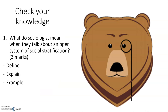Finally, there is a practice question for you to have a go at: what do sociologists mean when they talk about an open system of social stratification? This isn't a super obvious question — think about what an open system is. If you're stuck, go back to our first lesson before Christmas. For three marks, define it, explain it, and ideally give an example. That's your lesson for today — let me know if you have any problems. Cheers, bye.